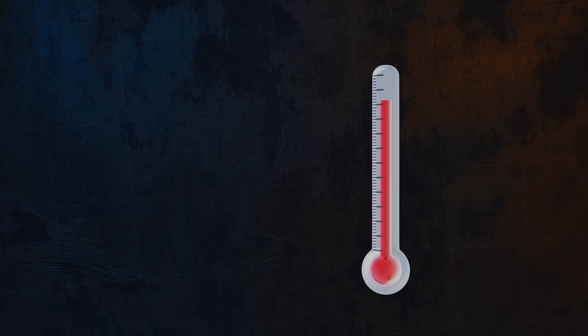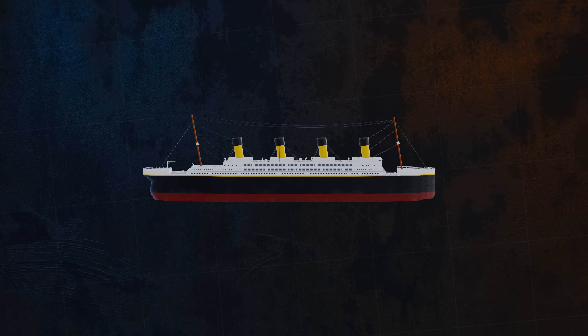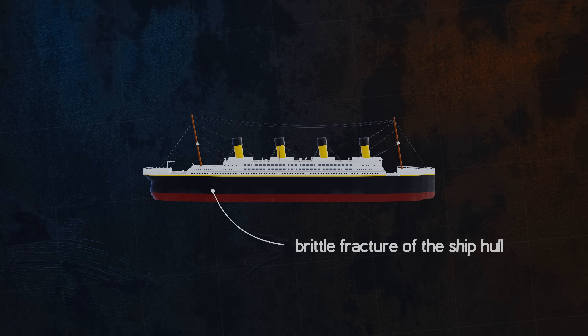Ductility can be dependent on temperature. A lot of different types of steel, for example, are ductile at room temperature, but become brittle when the temperature drops below the ductile-to-brittle transition temperature. This transition temperature is an important design consideration, because ductile failure is normally preferred to brittle failure. One very famous example of brittle failure is the Titanic. The icy waters of the North Atlantic are thought to have caused the steel of the ship's hull to drop below its ductile-to-brittle transition temperature, resulting in catastrophic brittle fracture.